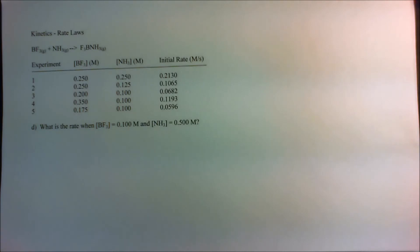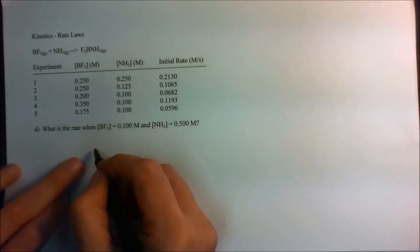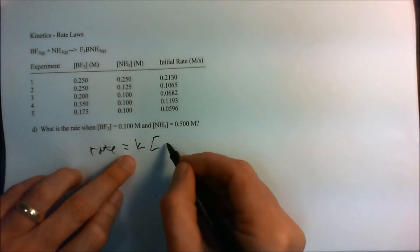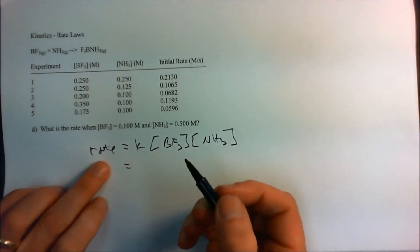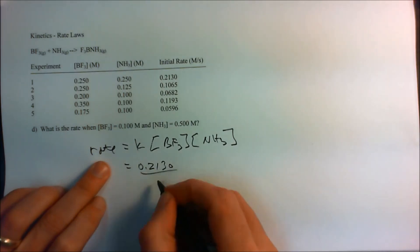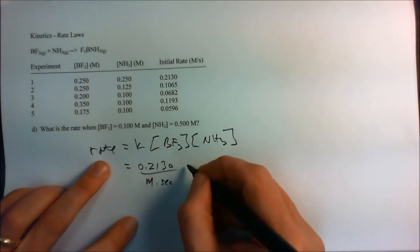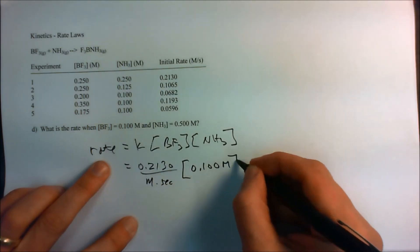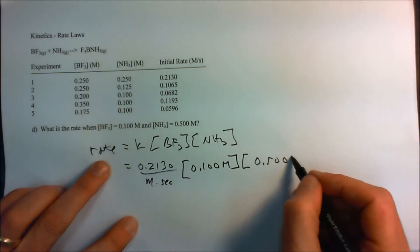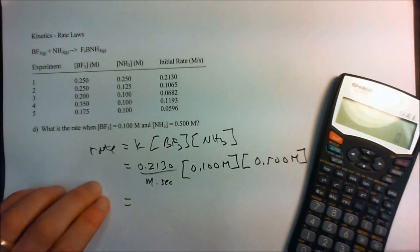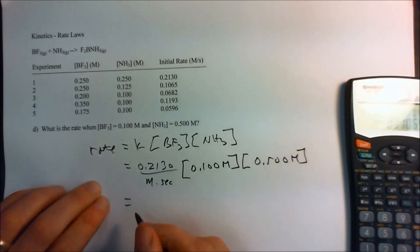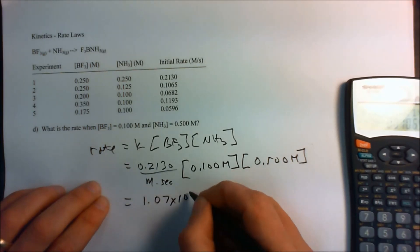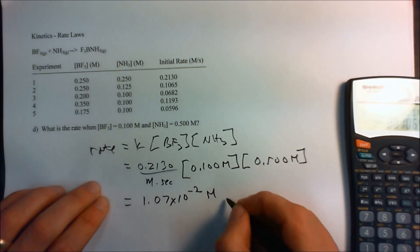Finally, we're asked, what's going to be the rate if we have these specific concentrations of 0.1 molarity and 0.5 molarity? And so, once again, the rate is given by K, boron trifluoride, ammonia, and we found our K previously, and it was 0.2130 per molarity seconds. And what's our concentration, 0.10 molarity, and we have 0.500 molarity, and we just need to put it in our calculator. Here, 0.2130 times 0.1 times 0.5 equals 1.07 times 10 to the minus 2 moles per second.